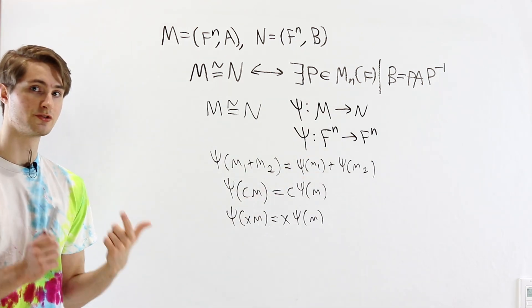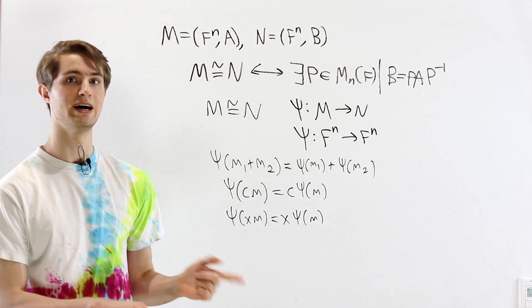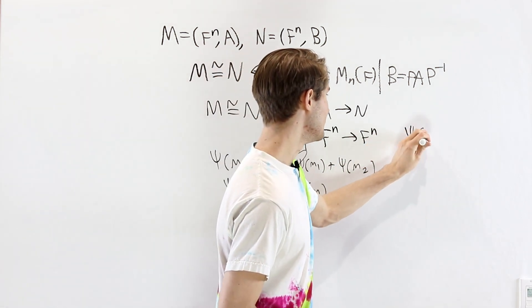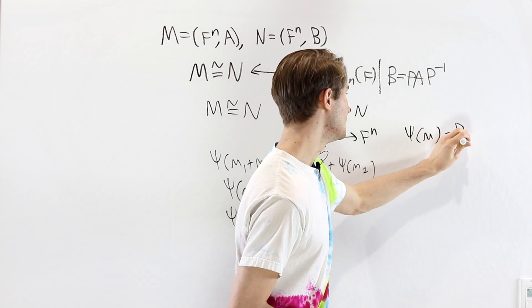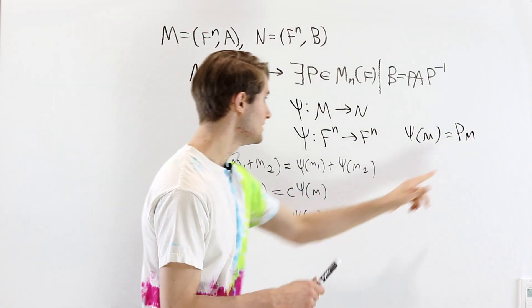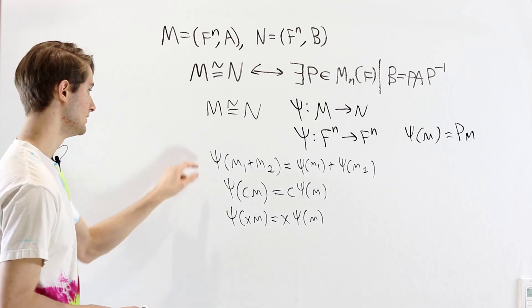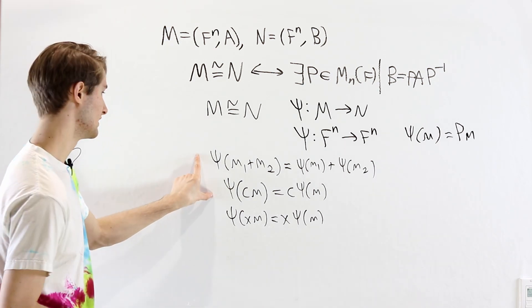And we know that every linear transformation can be described by a matrix. So we can describe ψ of m as equal to Pm for some matrix P, an n by n matrix over the field F. This is just from those first two conditions.